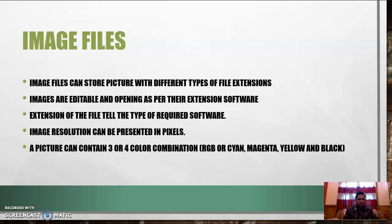Image files are collections of pixels in a graphics format and can store pictures with different file extensions — for example, abc.jpg or abc.png (Portable Network Graphics). The extension indicates which software is required to open the file. Image resolution is measured in pixels. Pictures can use a three-color RGB (Red, Green, Blue) combination for color images, or a four-color CMYK (Cyan, Magenta, Yellow, Black) combination — both are standard in computer systems.